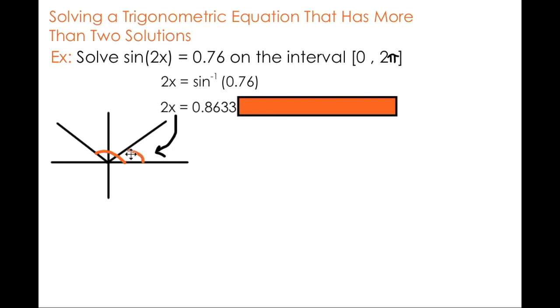So if I consider this angle right here to be 2x, and I use my understanding of the cast rule, remember my sine ratio is positive, so I can say this angle lies in the first quadrant. I'm also interested in the second angle, which you'll recall I can find by subtracting 0.8633 from π. When I do that I get a second angle, 2.2783.